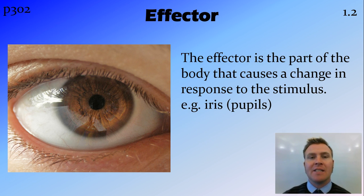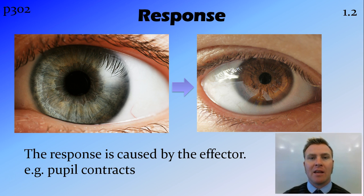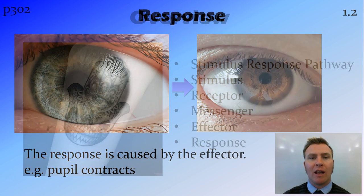The effector is the part of the body that elicits the change in response to the stimulus. In the example of a change in light levels, the effector is the iris — whether the iris contracts or relaxes changes the size of the pupil. When the light level increases, the stimulus is that increased light level. The photoreceptors in the retina pick that up and send the message through the optic nerve. The brain decides too much light is coming in and sends a message to the iris to constrict, making the iris larger and the pupil smaller, therefore allowing in less light.